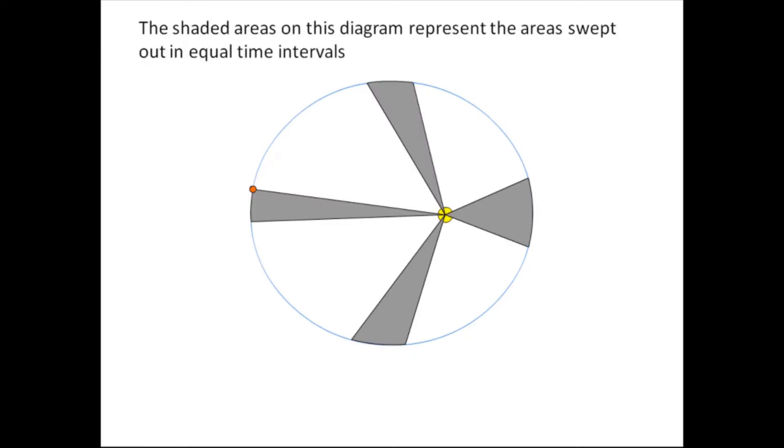Now, the shaded areas on this diagram represent the areas swept out in equal time intervals. Let's say it might be in a month. So, when the planet is traveling quickly, you get a triangle which is short and fat. When the planet is traveling slowly, you get a triangle which is long and thin. Now, these triangles all have something in common. And according to Kepler's second law, they all have the same area. Kepler's second law says that in equal time intervals, a planet will sweep out equal areas.